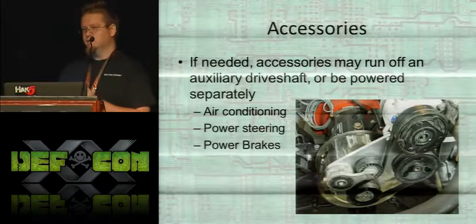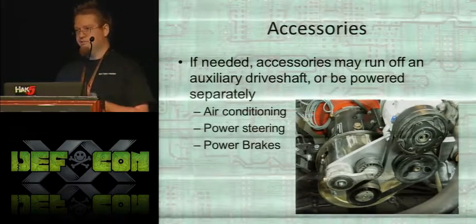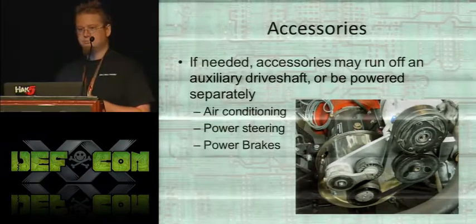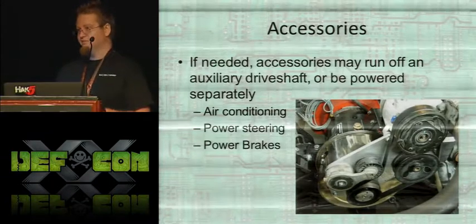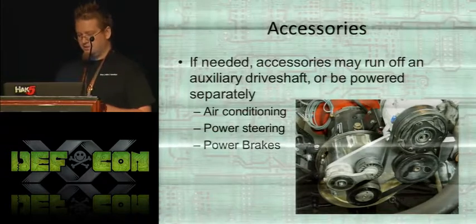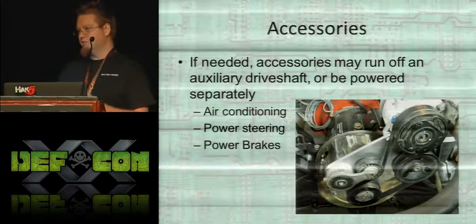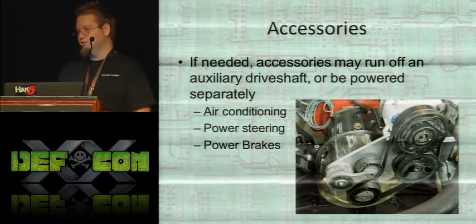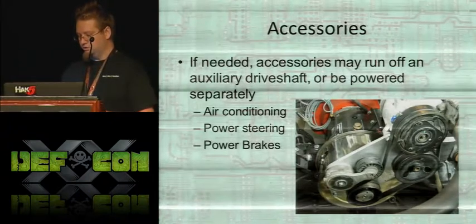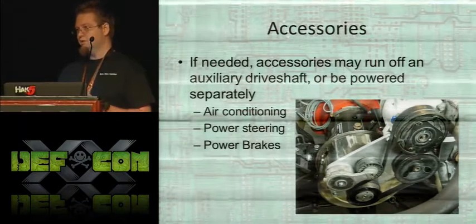For accessories, one of the great things about a VW Bug is you don't need much — everything's manual. With more modern vehicles you need things like air conditioning, power steering, and power brakes. If you need accessories, there are two ways to do it: one is to drive them off an auxiliary shaft — where the motor shaft goes all the way through and you hook up a flywheel and accessories on the other side, such as air conditioner, power steering, and power brakes all on a little belt. The alternative is to have each accessory connected to a separate electric motor.